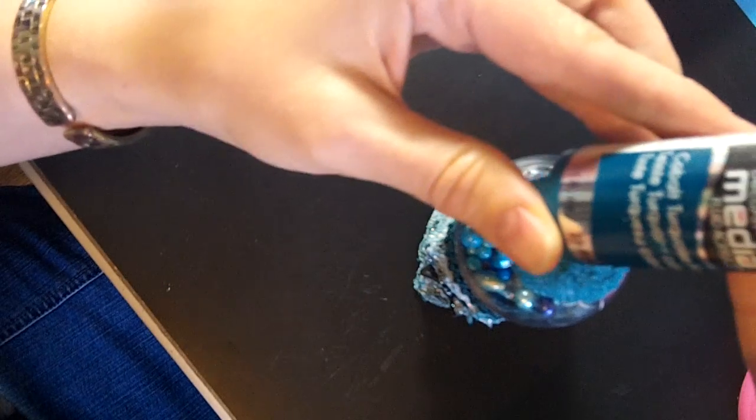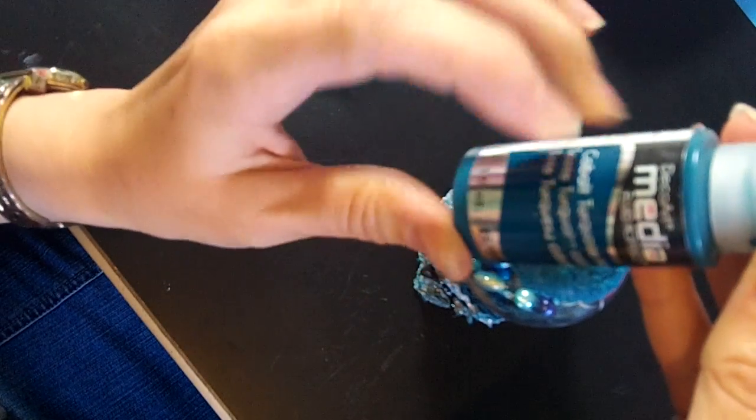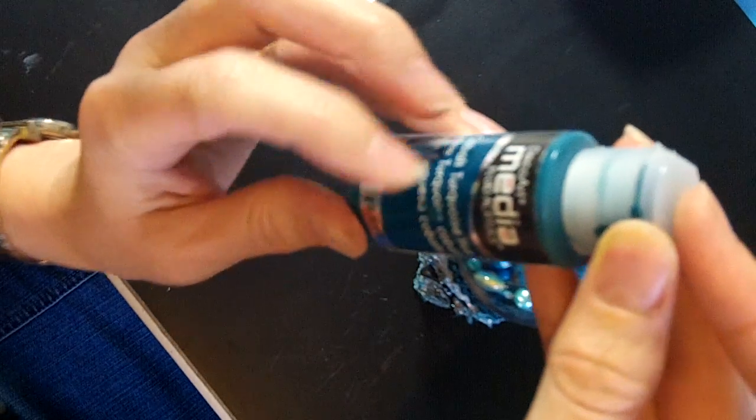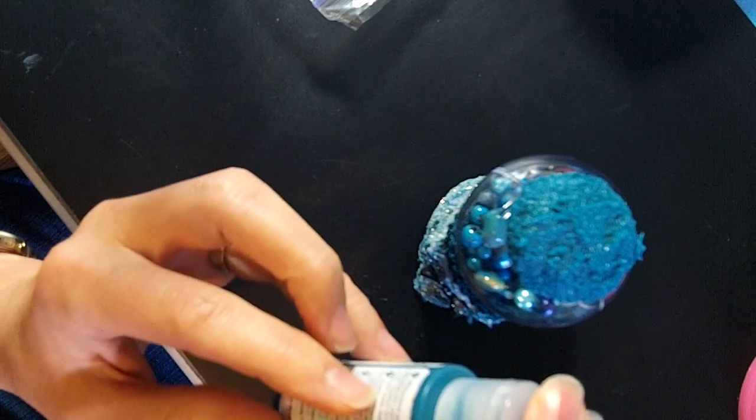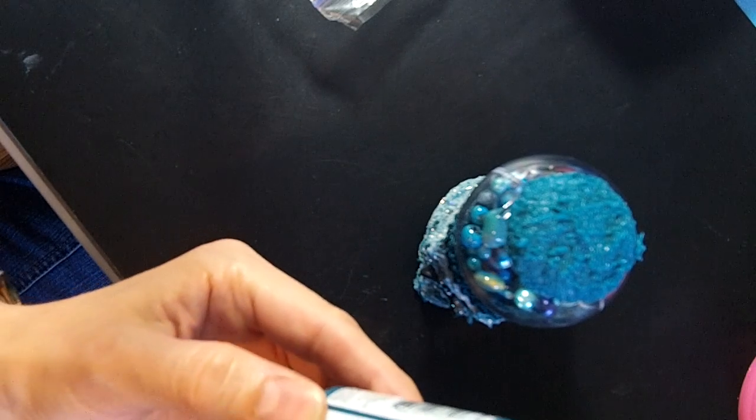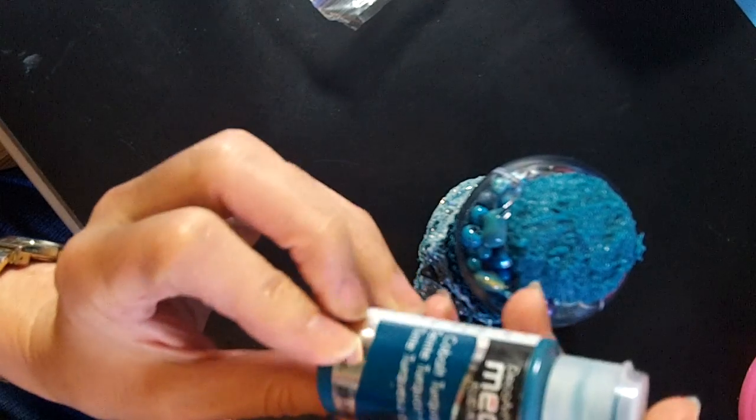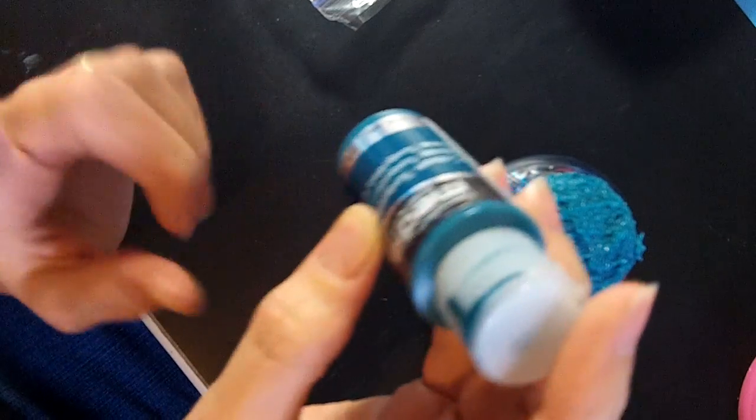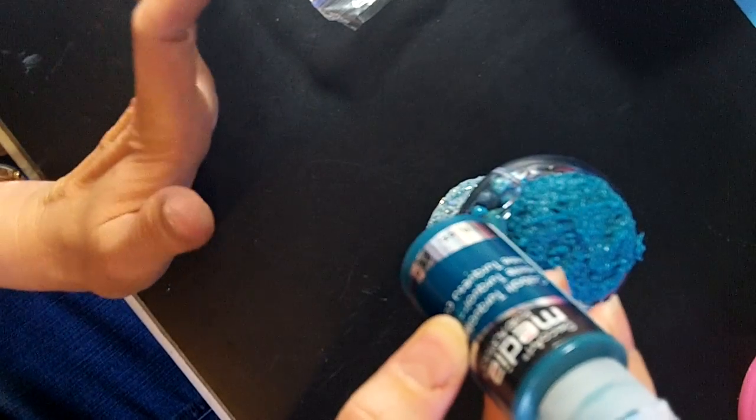It gives you a really fun texture. Then I use the Deco Arts Medium Liquid Acrylics in Cobalt Turquoise. This is a super thin paint that is professional grade with really high quality pigment. A tiny drop of this in any modeling paste or anything you're using really goes a long way.